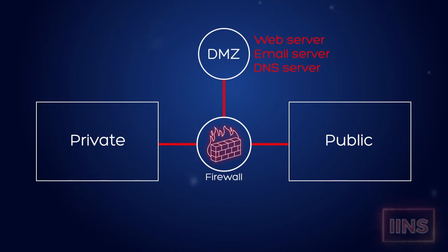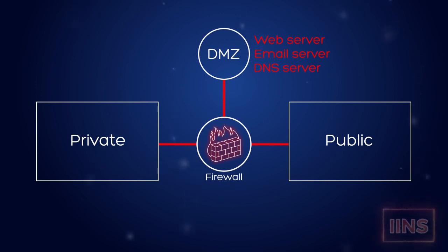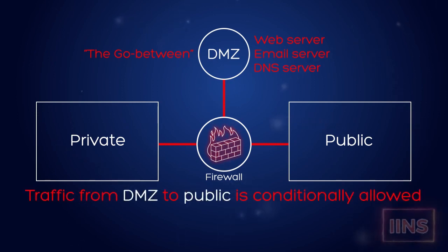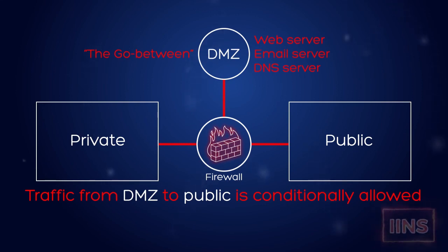Where you have internal servers in your private network that do not need to face the public, your DMZ will have web servers, email servers, perhaps some application servers that people from the public side of the network need to access. Think of your DMZ as sort of the go-between for the private and public aspects of your network. For that reason, we can conditionally allow data from the DMZ to the public zone. So, three common network zones: private for the inside part of your network, public for the outside or internet zone, and the DMZ in between.